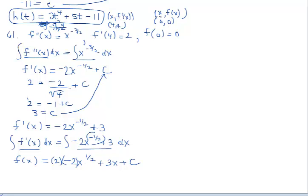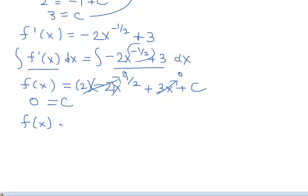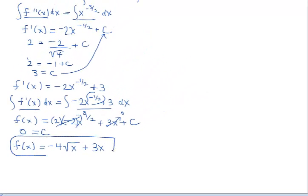Moving on to the next term, plus 3 is the derivative of 3x, and don't forget the constant of integration. Let's find c using the point (0, 0): when x is 0, f of x is 0. So 0 equals the square root of 0, which is 0, plus 3 times 0, plus c — so c is 0. As a final step, f of x equals negative 4x to the one-half, which is negative 4 times the square root of x, plus 3x. So we just solved the differential equation by integrating twice to find the original function.